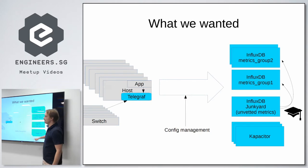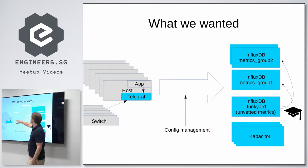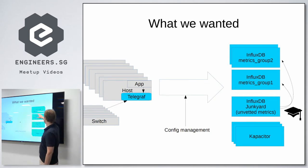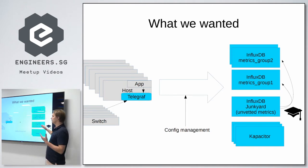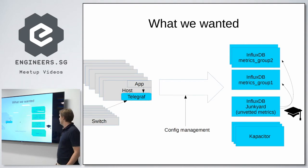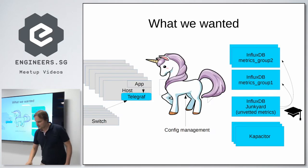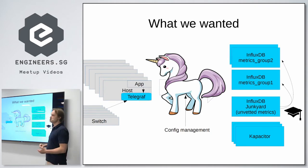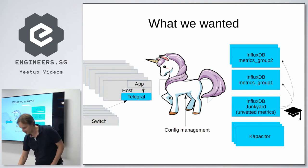What we really wanted is a magical message bus which sends things based on some config management scheme to a bunch of InfluxDB servers. Things we haven't checked go to a kind of junkyard, and then we graduate them to proper InfluxDB instances. We can set up arbitrary metric groups and have a bunch of Capacitor instances running on the side.